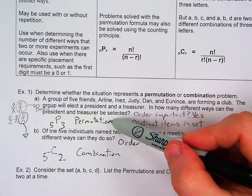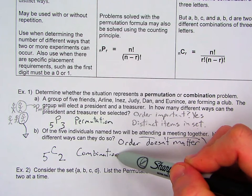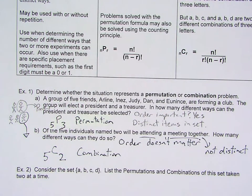So attending a meeting is not distinct. So the number of ways that we can choose this is 5C2. So this has to be a combination. So again, in the first one order matters. In the second one, the order doesn't matter. So permutation combination.